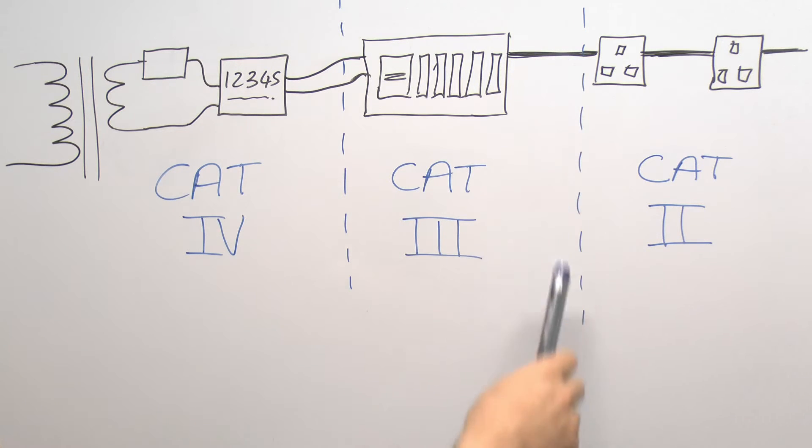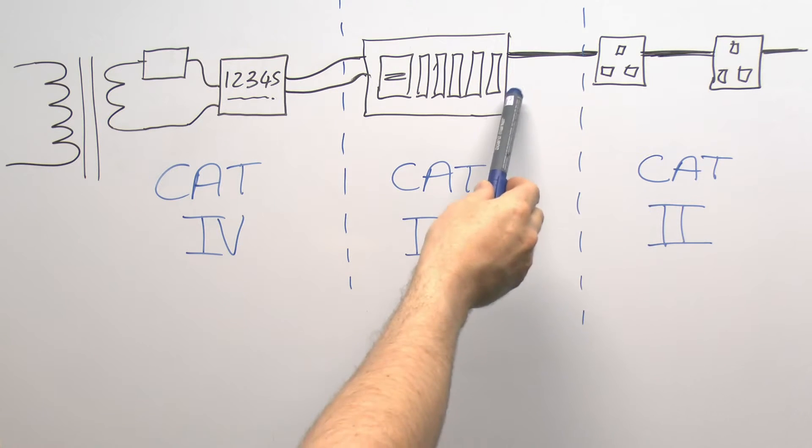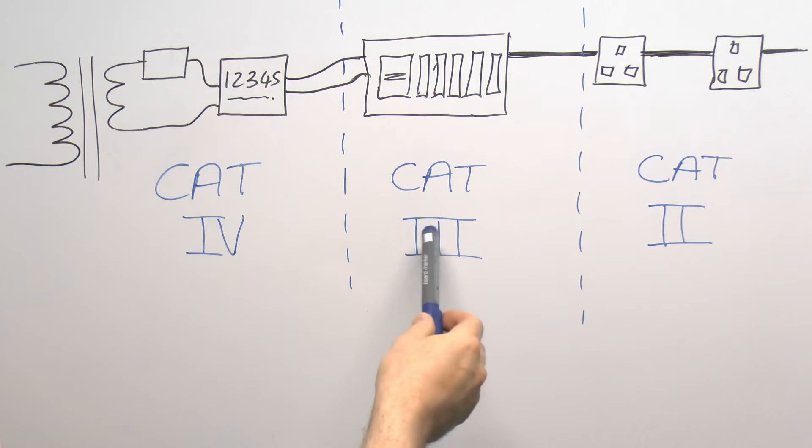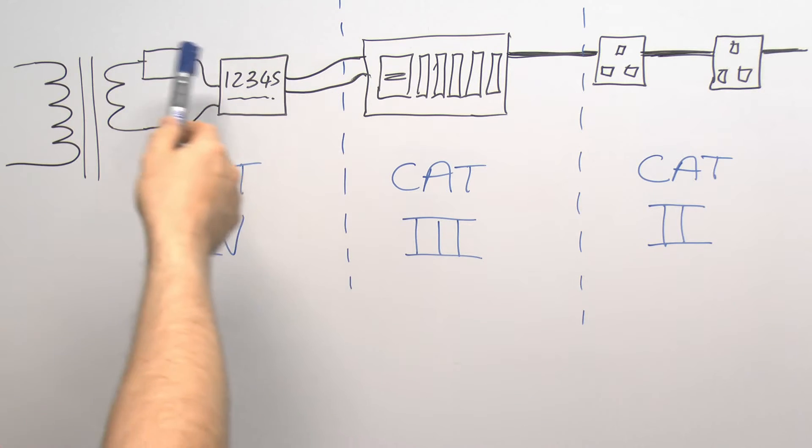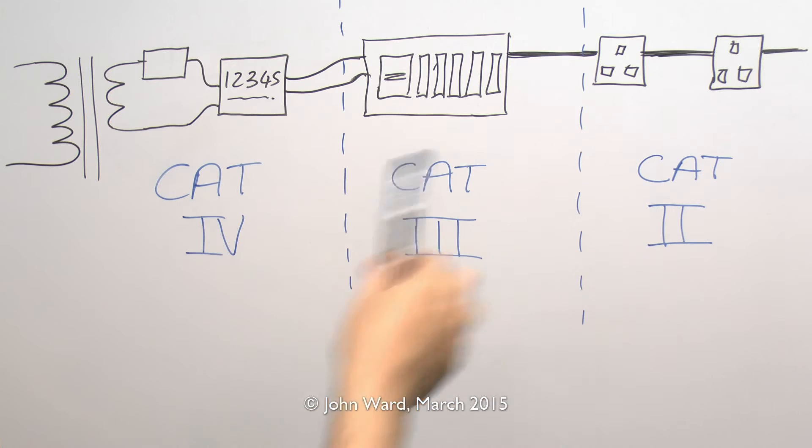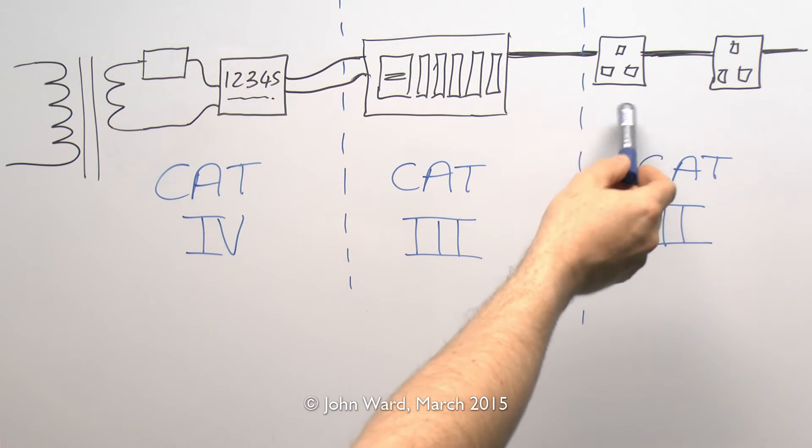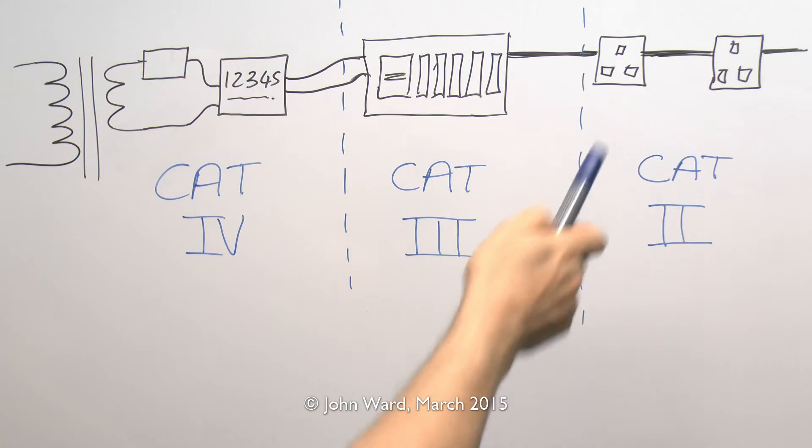These boundaries note aren't specifically defined like this because for example a socket outlet right at the distribution board will still be a category 3 situation. So it all depends on the actual distance away that you're going. And again if you poked about the consumer unit and managed to short out the incoming terminals there well that's probably going to be a category 4 because again you're only moving into this section here. So although I've put the lines there those are not set in stone as it were. They're just general guidelines as to the distance you're moving away from the source. And generally the more protective devices you have as you move further away. And certainly in the UK if you were going to plug an item in here it would obviously have a fuse in the plug. So again you've got fuse here, circuit breakers and again the main incoming fuse as well.